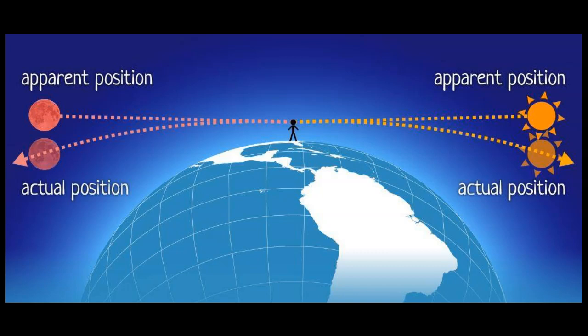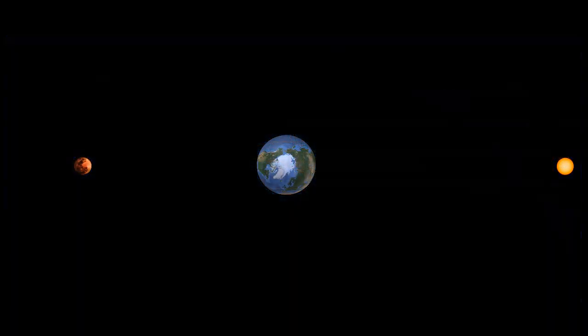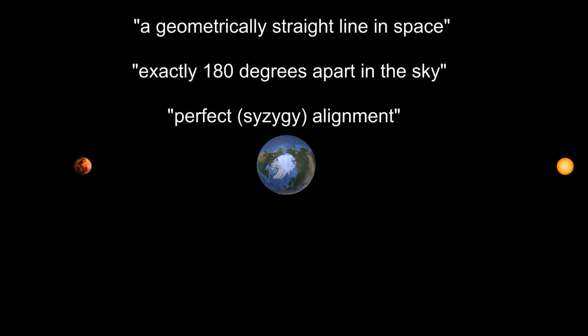Let me try to make this illustration at least a little closer to heliocentric's version of reality. So this is my not-to-scale version of the sun, earth, and eclipsed peak new moon, and what that NASA article called a geometrically straight line in space, exactly 180 degrees apart in the sky, and a perfect syzygy alignment.